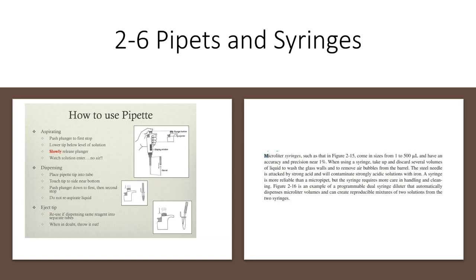Syringe is an instrument used for very minuscule volumes. Microliter syringes come in 1 to 500 microliters and have accuracy and precision close to 1%. When using a syringe, take up and discard several volumes of liquid to wash the glass walls and remove air bubbles from the barrel. The steel needle is attacked by strong acid and will contaminate strongly acidic solutions with iron. Syringe is more reliable than a micropipet but requires more care and handling.